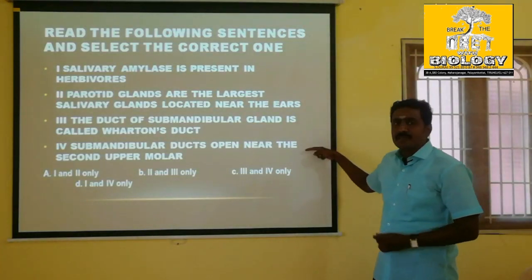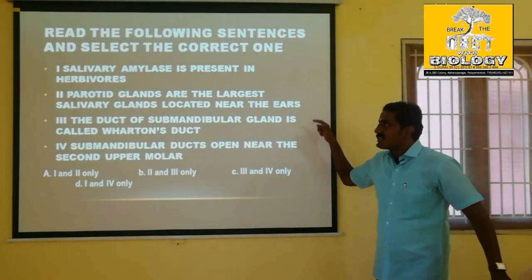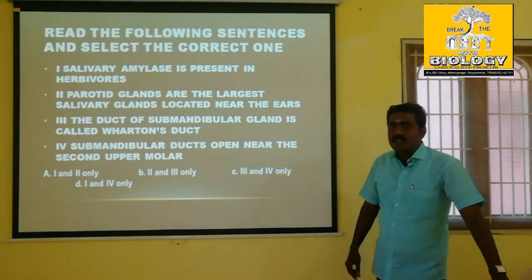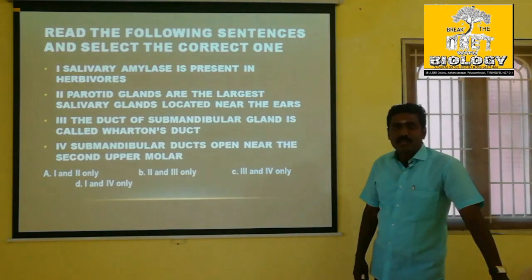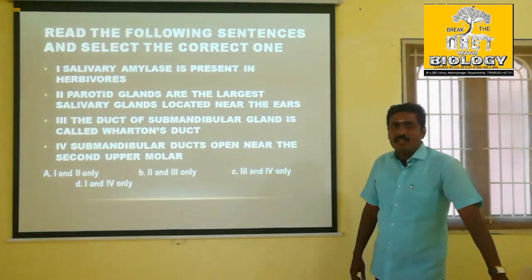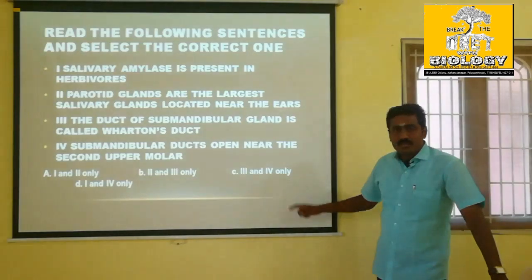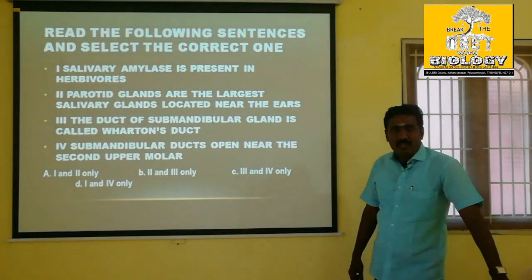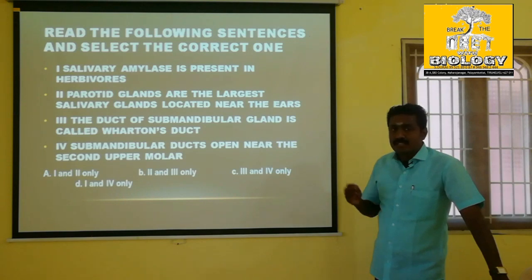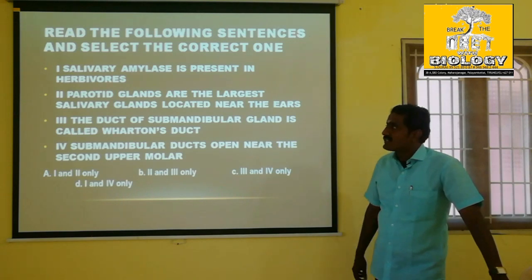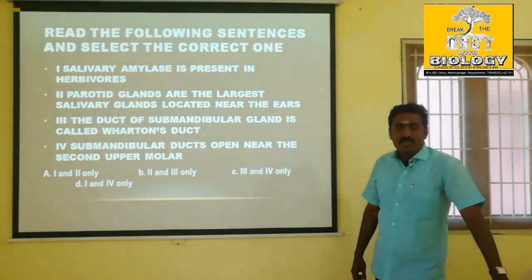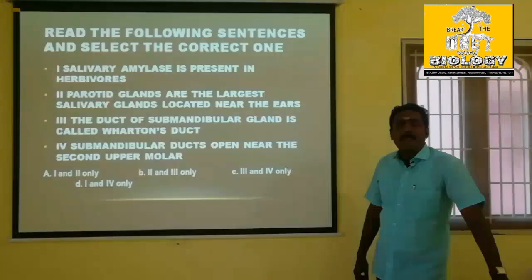There are 4 statements. In the 4 statements, there are 2 options to choose from. You can find that salivary amylase is present in herbivores — one of them is correct.